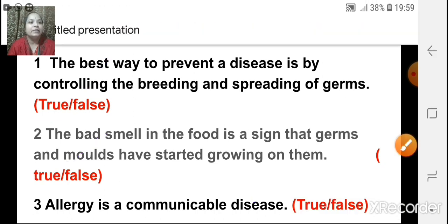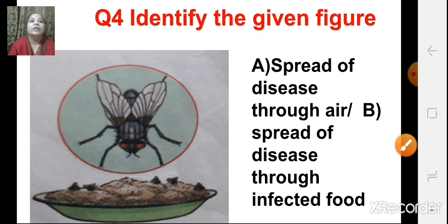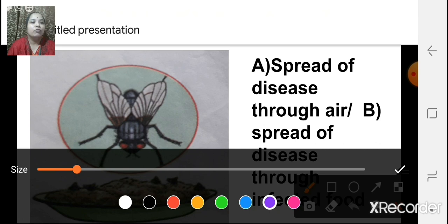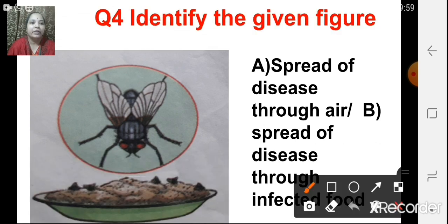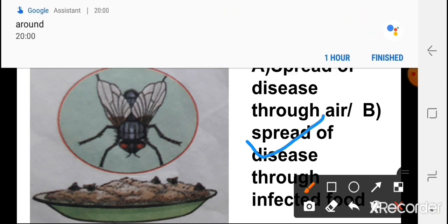Let us see the next set of questions. Identify the given figure. The options are: spread of disease through air, or spread of disease through infected food. The answer is B — spread of disease through infected food.